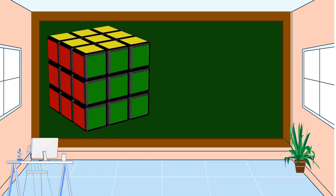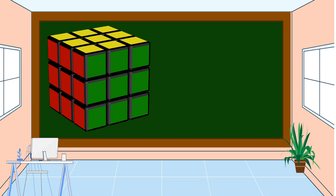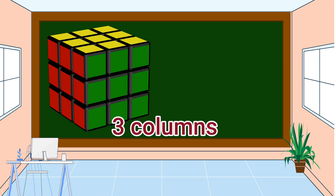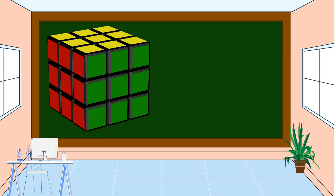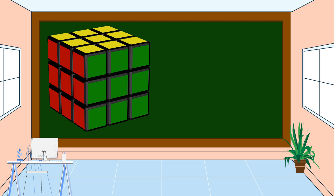Look at the Rubik's cube. How many rows are there? It has three rows. How many columns are there? It has three columns. What is the height of this Rubik's cube? The height is three units.